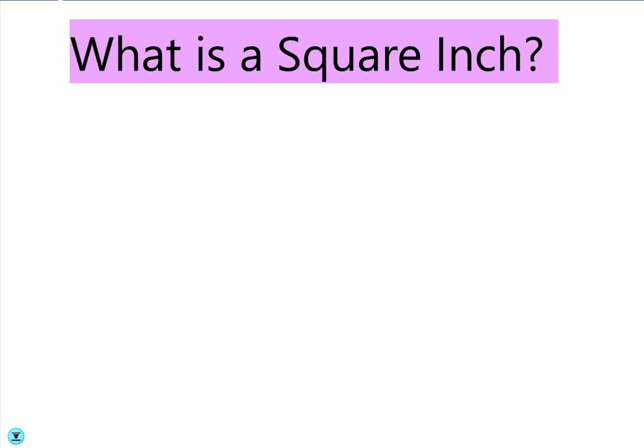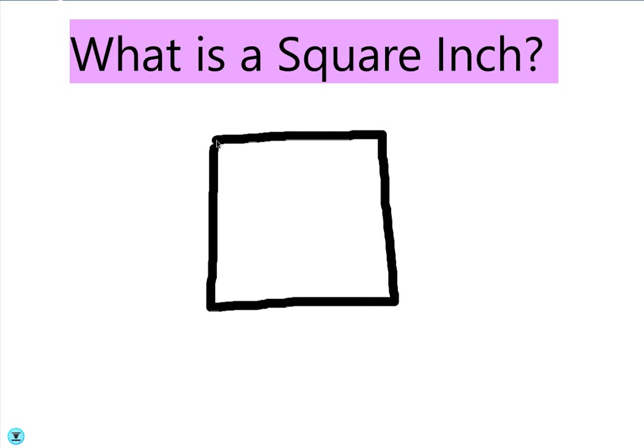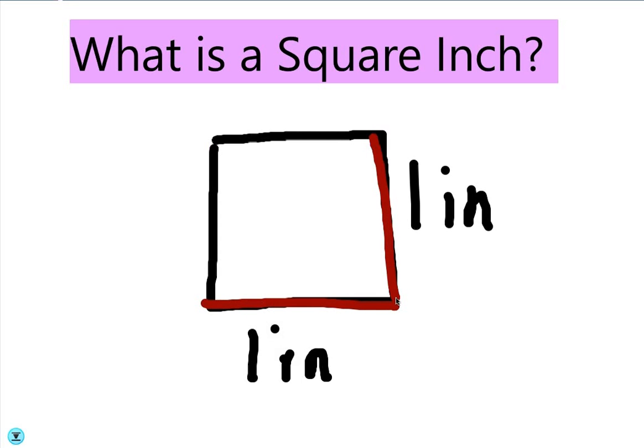So first of all, I need to write this down in your notes, what is a square inch? Like he said, you can think of it as a square. And a square inch just means that each side of the square is one inch long. That's all the square inches. The way you write that, it's kind of weird, but you put the unit first with an exponent of two. That tells you it's in the two dimensions. That's what a square inch is.